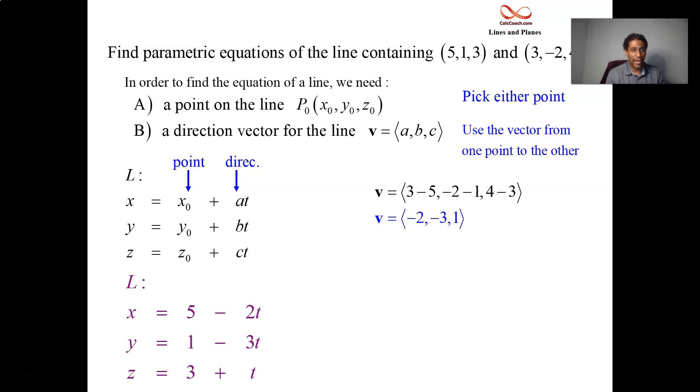When t is 0, you'll find yourself at the first point, (5, 1, 3). And it turns out, by the way you set this up, when t is equal to 1, you'll find yourself at the second point, (3, -2, 4).